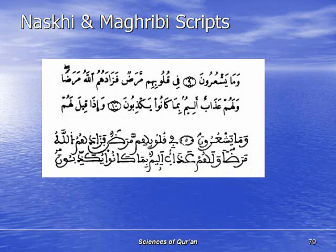In Maghribi script, fa is written with a dot underneath. So if you try to read Quran in this script, it can change the meaning — be very careful. There may be more differences beyond that one letter. This script is very common among people who live in northwestern Africa — Tunisia, Algeria, Morocco. They also use Warsh recitation, which is a little different. We follow Hafs recitation here, whether it's Farsi or Naskh script.